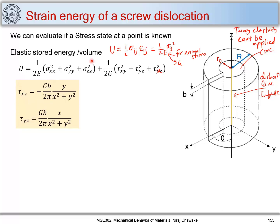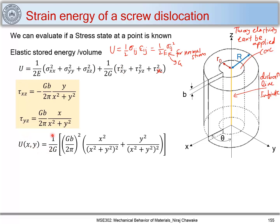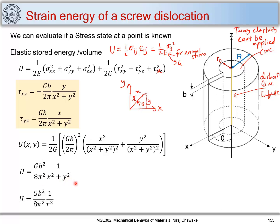If we substitute the screw dislocation stresses into the energy relation, we get u = (1/2g)(Gb/2π)², and when we square and add these terms we get: u = Gb²/(8π²) · (1/(x² + y²)). Writing this in terms of r — since x² + y² = r² — we get u = Gb²/(8π²) · (1/r²).